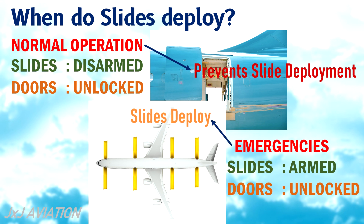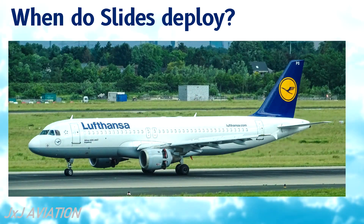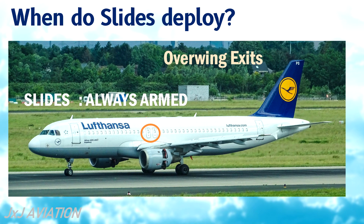Before opening the door, the crew must ensure there are no obstructions to the slide. On the overwing exits, the slides are always armed, so as soon as these exits are opened, the slides will deploy automatically. The slides installed here can never be disarmed.